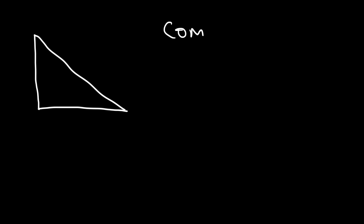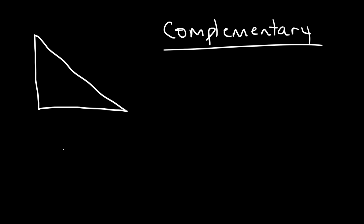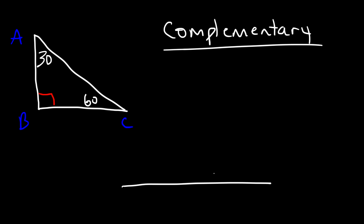In this video we're going to talk about complementary and supplementary angles. Complementary angles are angles that add up to 90 degrees. Consider this right triangle — let's call it triangle ABC. If angle A is 30, then angle C has to be 60. Angle A and angle C are complementary to each other. Angle C is the complement of angle A. Anytime two angles add up to 90, they are complementary to each other.